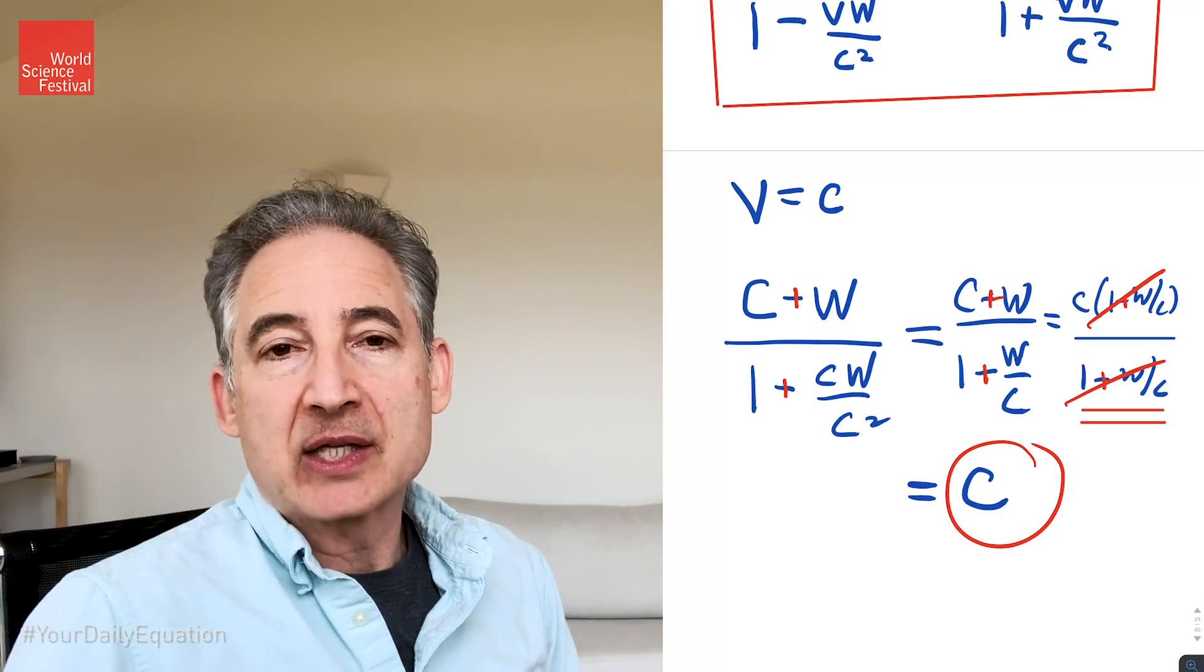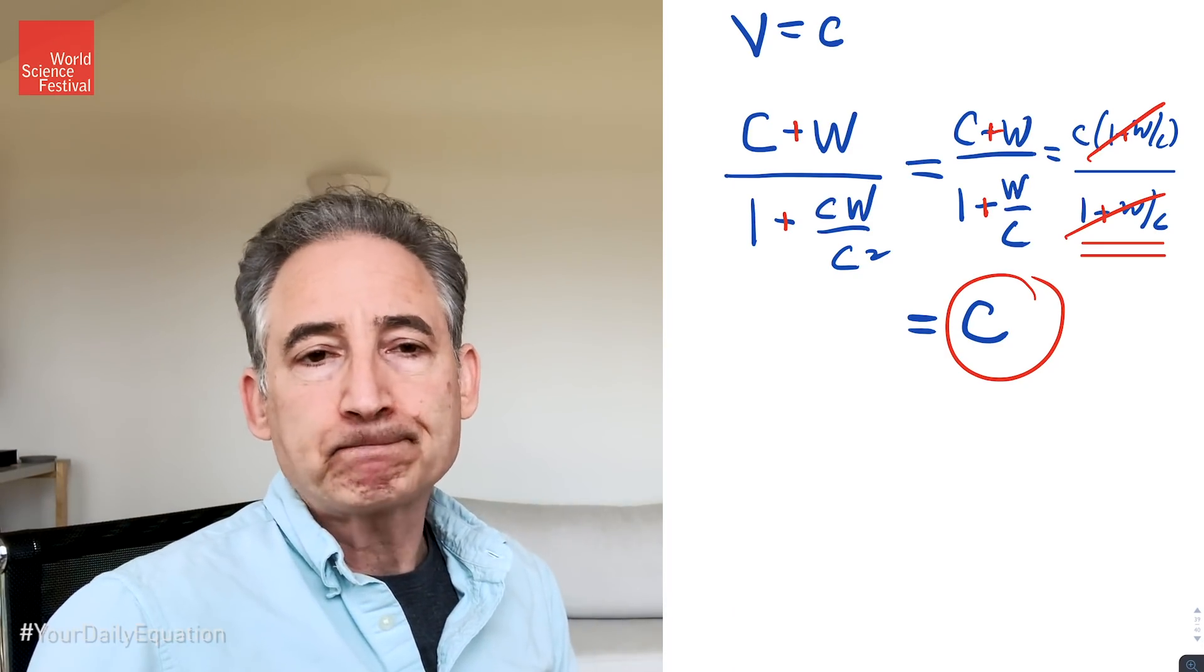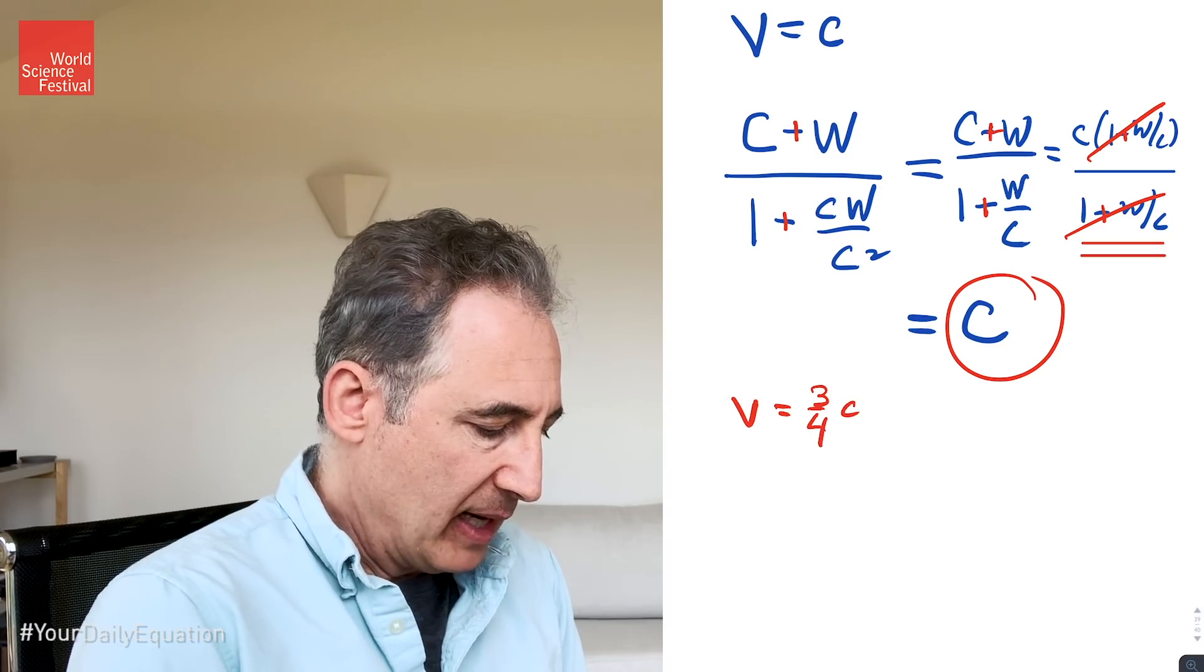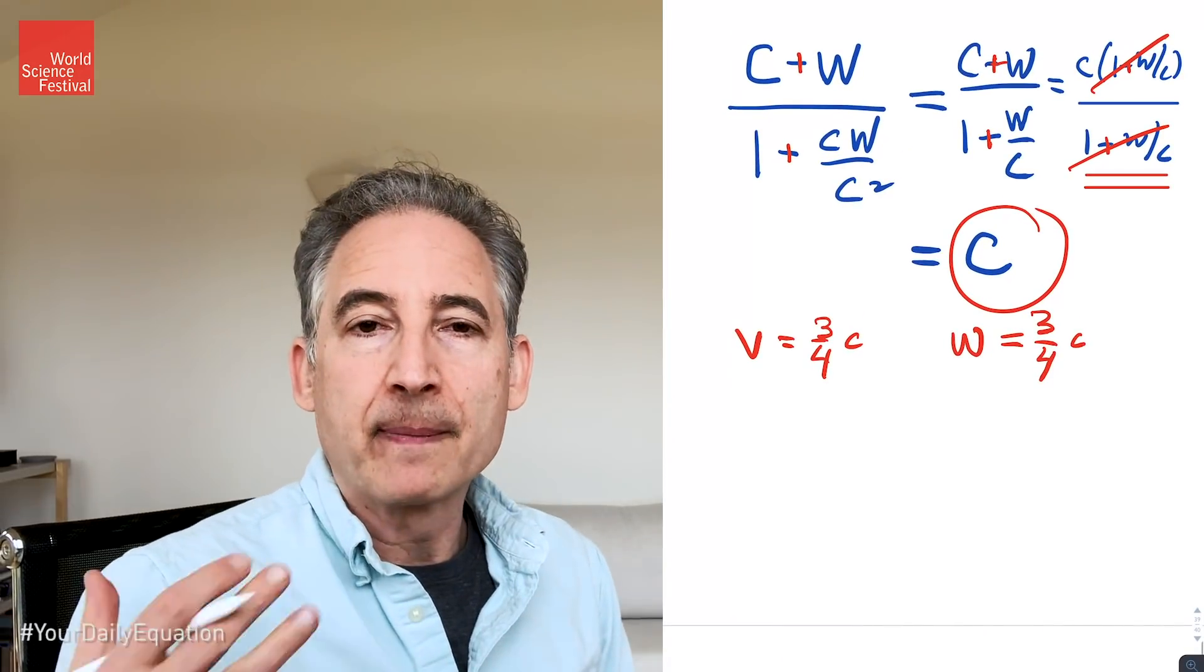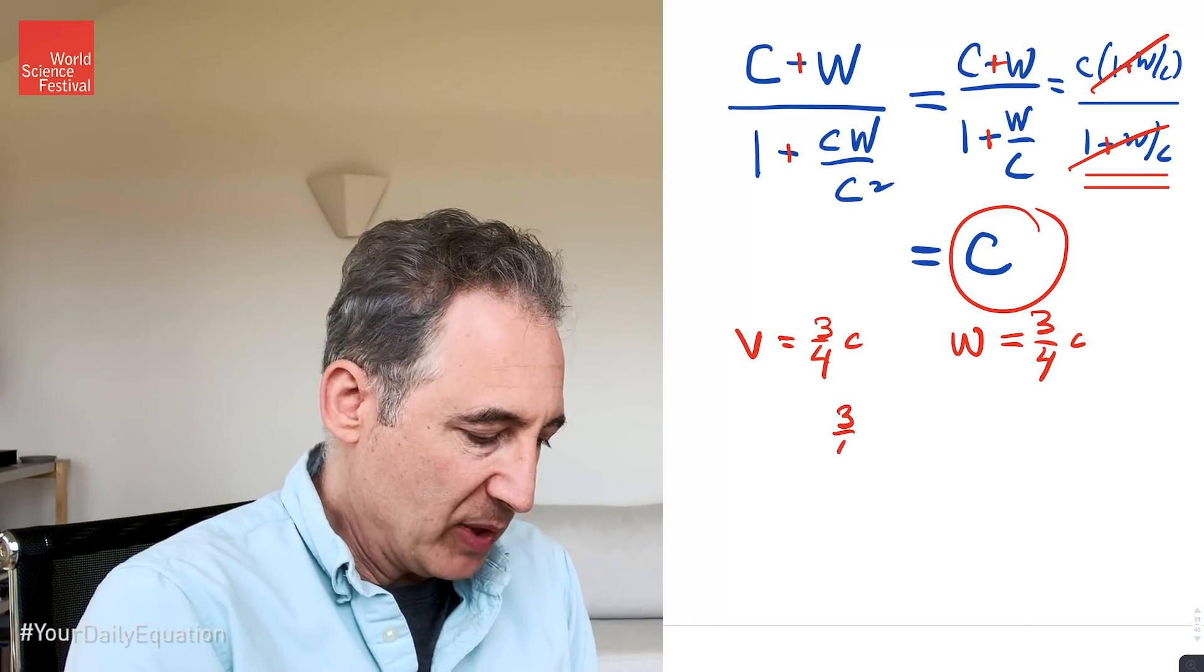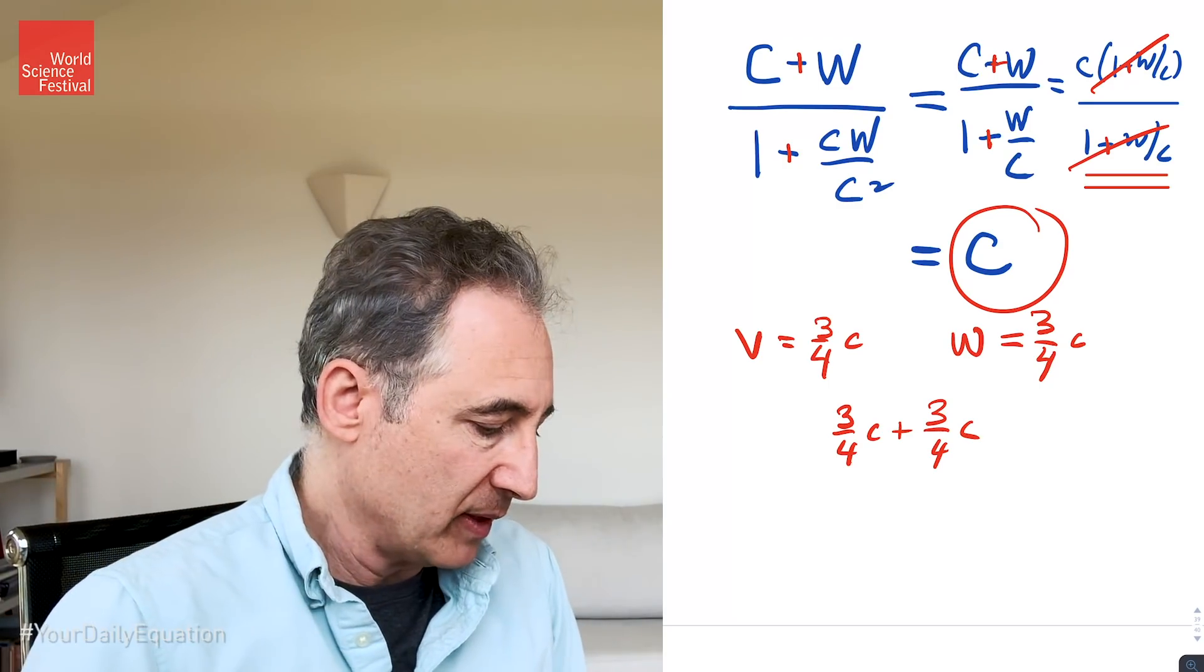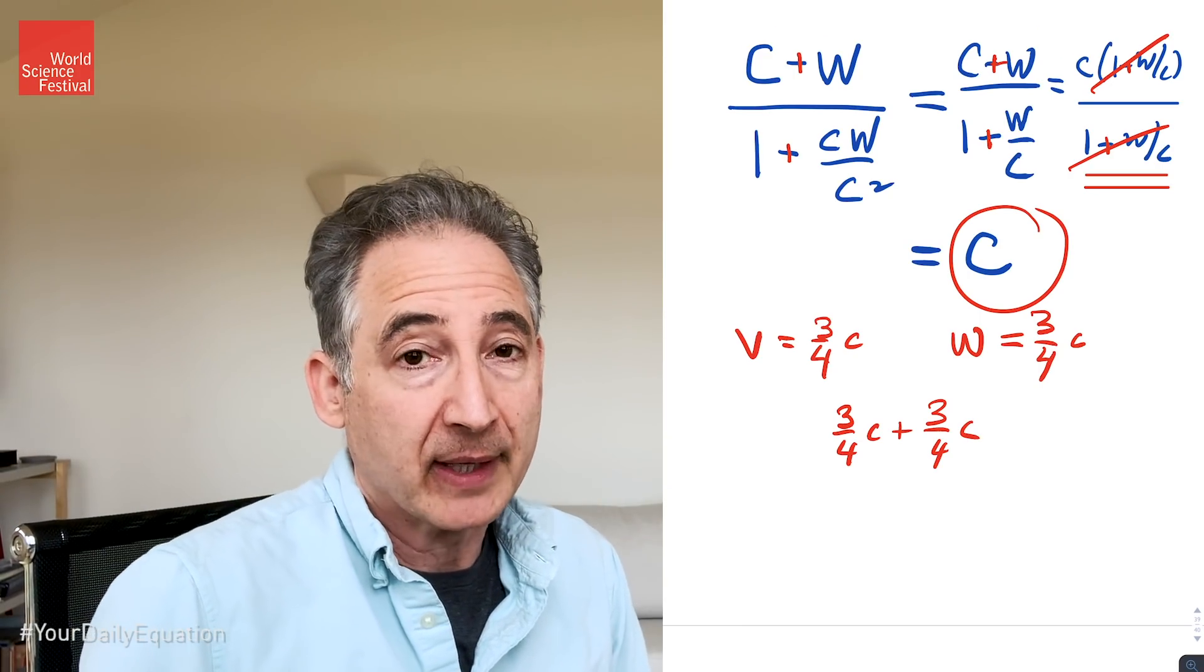Now that's the special case where v is equal to c. It's fun to use this formula even in other circumstances. Imagine that you have an object that is being fired at 3/4 the speed of light, and let's say you run toward it at 3/4 the speed of light. Now your naive classical intuition would tell you that the net speed from your perspective would be 3/4 the speed of light plus 3/4 the speed of light, coming toward you and you're running toward it. But of course that number would be 6/4 of the speed of light, that's bigger than the speed of light. Problem.